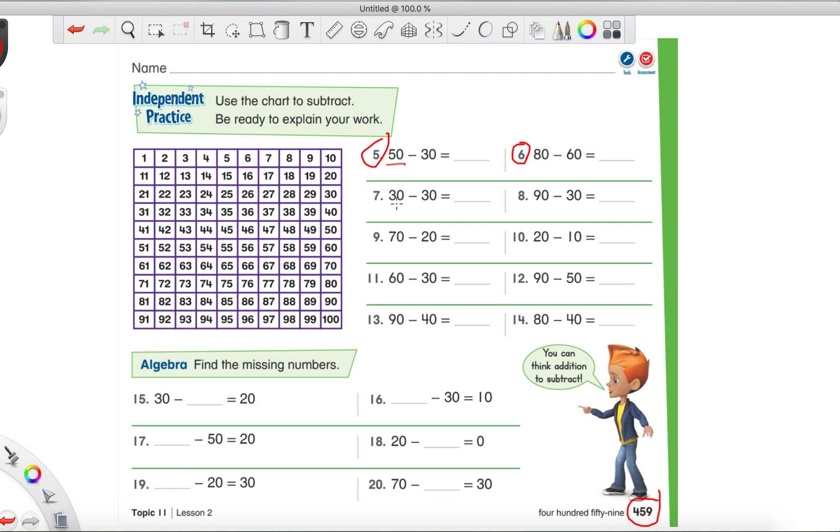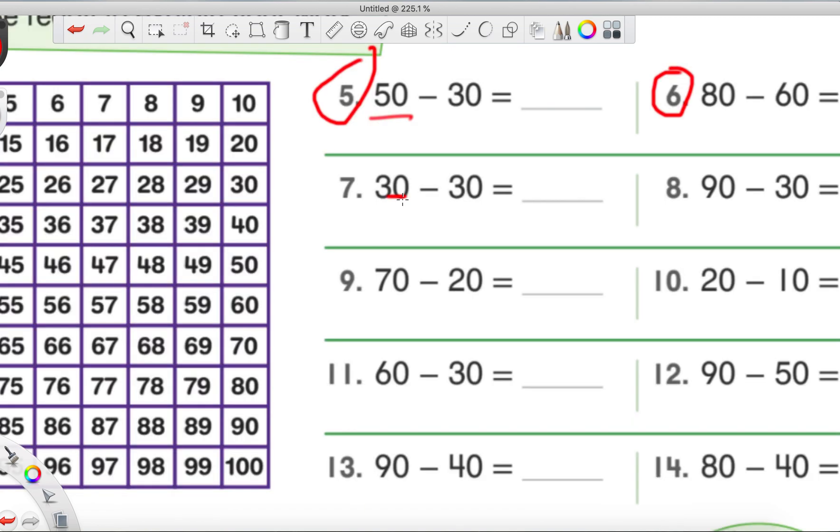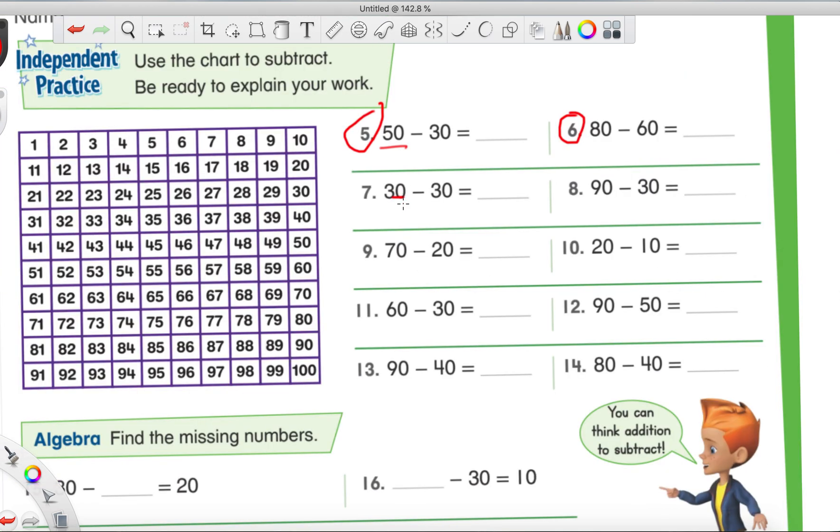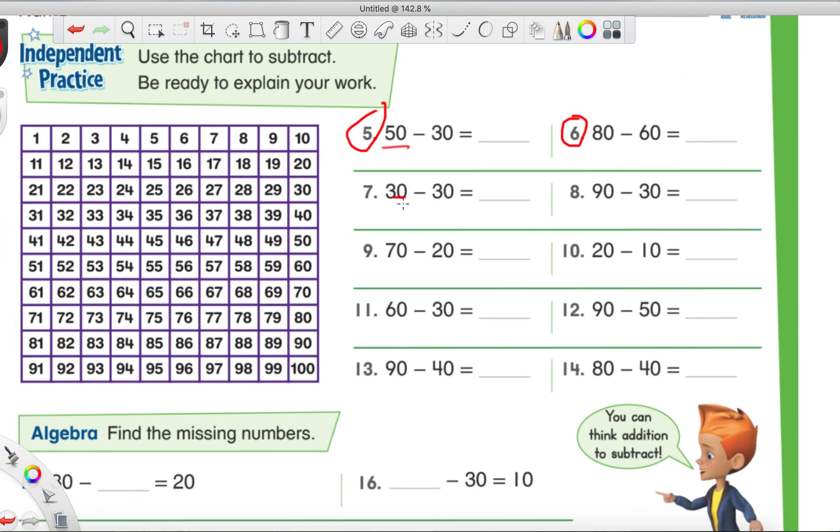So first, we're going to find 50. I'll zoom in just a smidge here. Come on. Oh, too much, too much, too much. There we go. Whew. Okay. So let's find the number 50. Found it. And then we look at our next number and we just have to look at the tens place. We see that there's a three. So we're taking away 30. So we're just going to take three jumps. One, two, and three. We land on 20. So 50 minus 30 is 20.